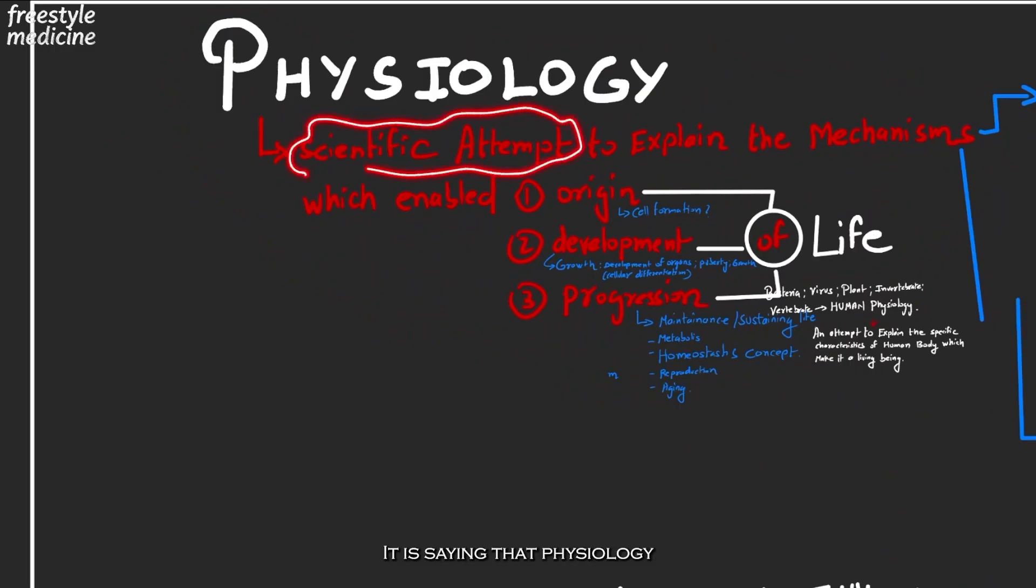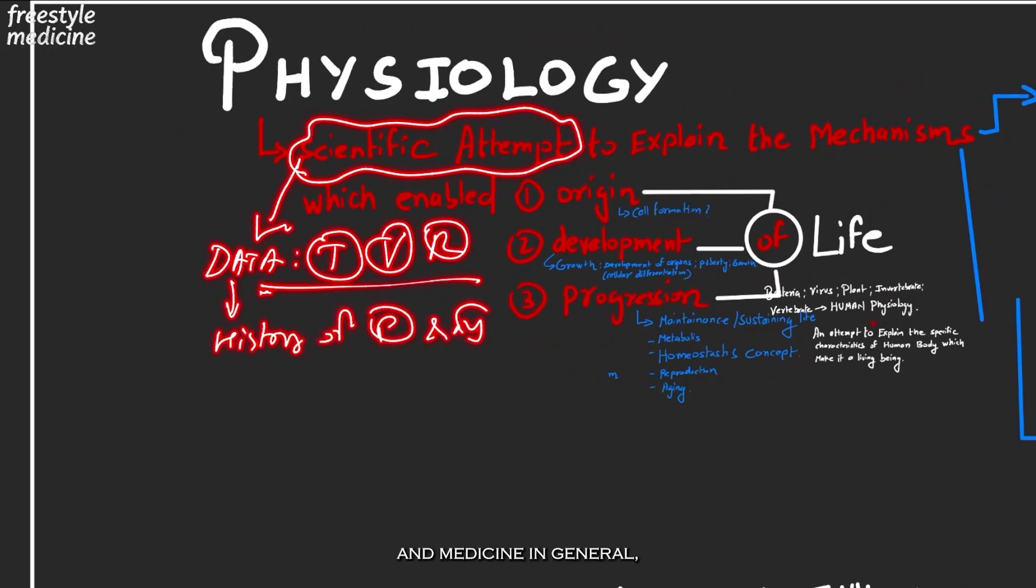Let's break this down. It is saying that physiology is a scientific attempt, which basically means that it is based on data that is testable, verifiable, and repeatable. Why is it important that we mention this?